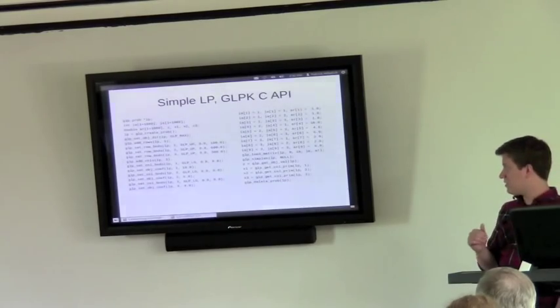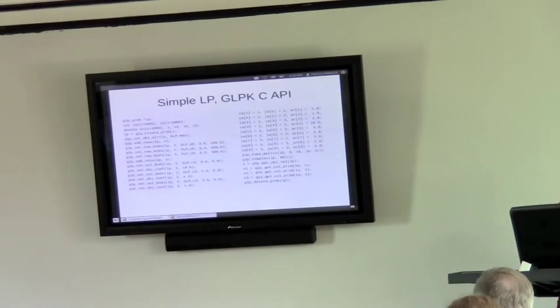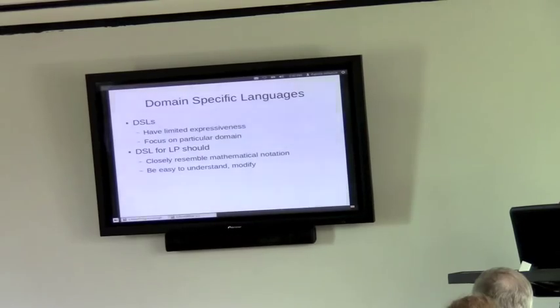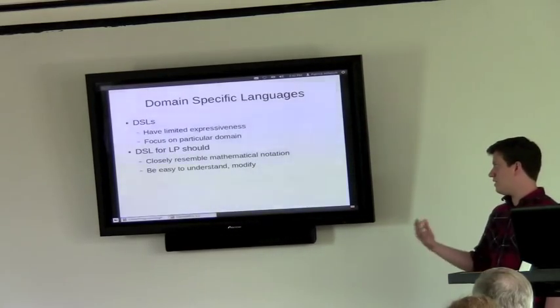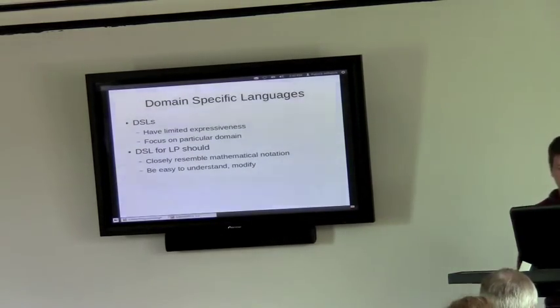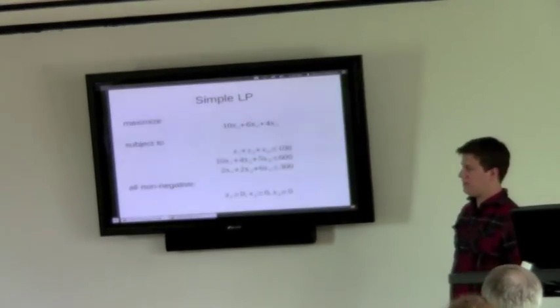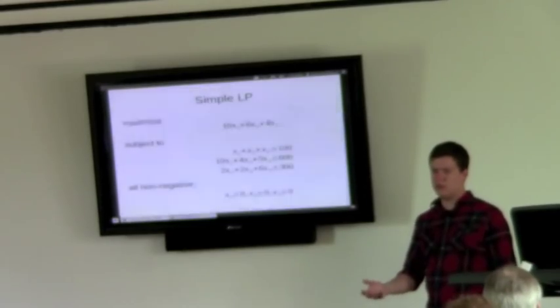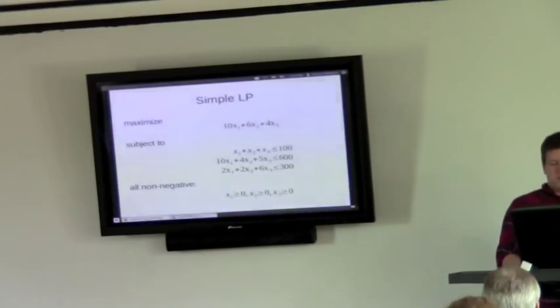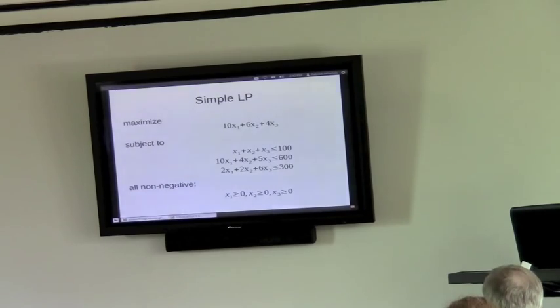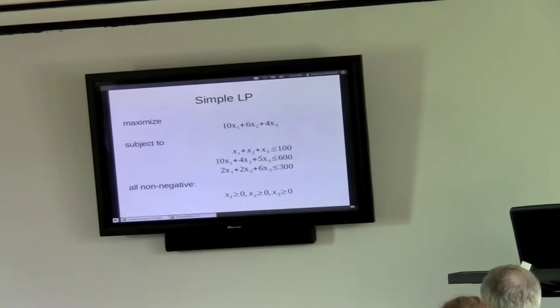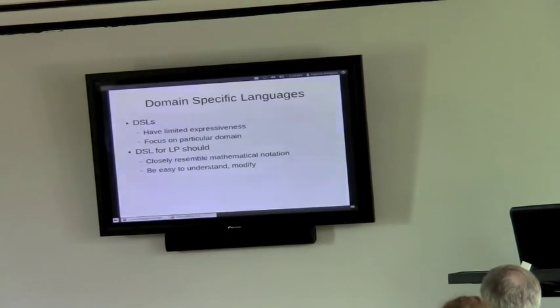So we'd like to do something better. And what we really want to do is have a way of defining a response to the computer that looks very much like this. If it looks like this, then you can read it and understand it. It's easy to tweak it at constraints as you need to. So what we need to write is a domain-specific language.